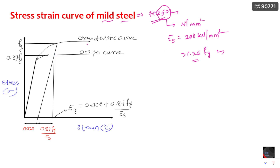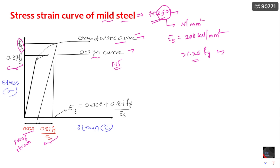The characteristic strength curve represents the actual yield strength Fy of mild steel. When you reduce this characteristic curve to the design curve by applying the partial safety factor — 1.15 for steel — you get 0.87 Fy, which is the design strength of mild steel. In the strain axis, 0.002 is the proof strain, and 0.87 Fy divided by ES gives the elastic strain. Combining both proof strain and elastic strain gives the failure strain.